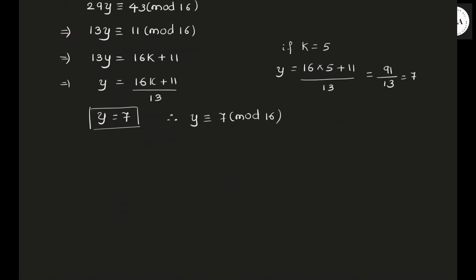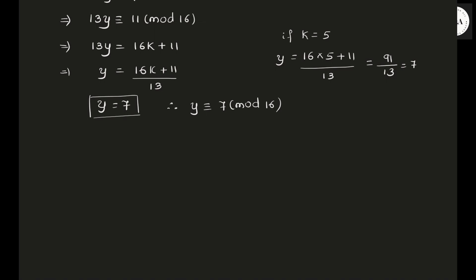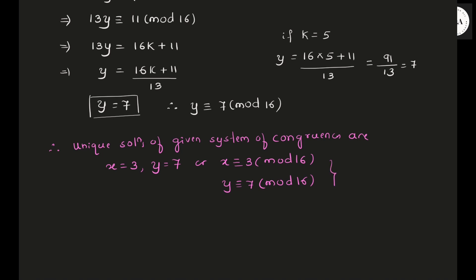So we have the solutions. The unique solutions are x congruent to 3 mod 16 and y congruent to 7 mod 16. Therefore this is how to solve the given system of linear congruences in two variables. I am going to solve one more example which has been asked in your model question paper. Till then, practice this. If you have any doubts, please post your doubt in the comment box.